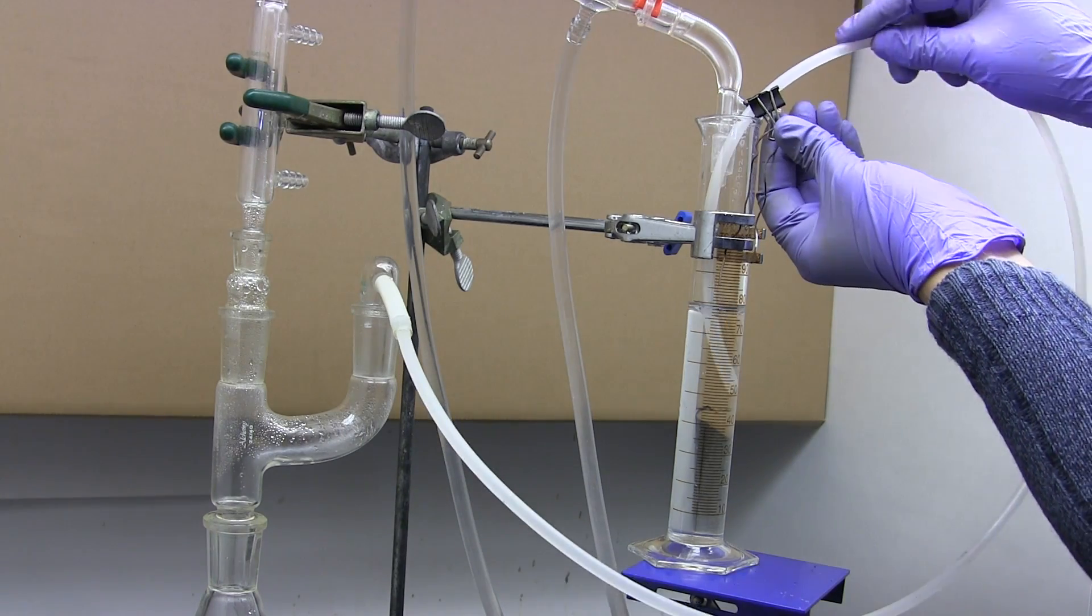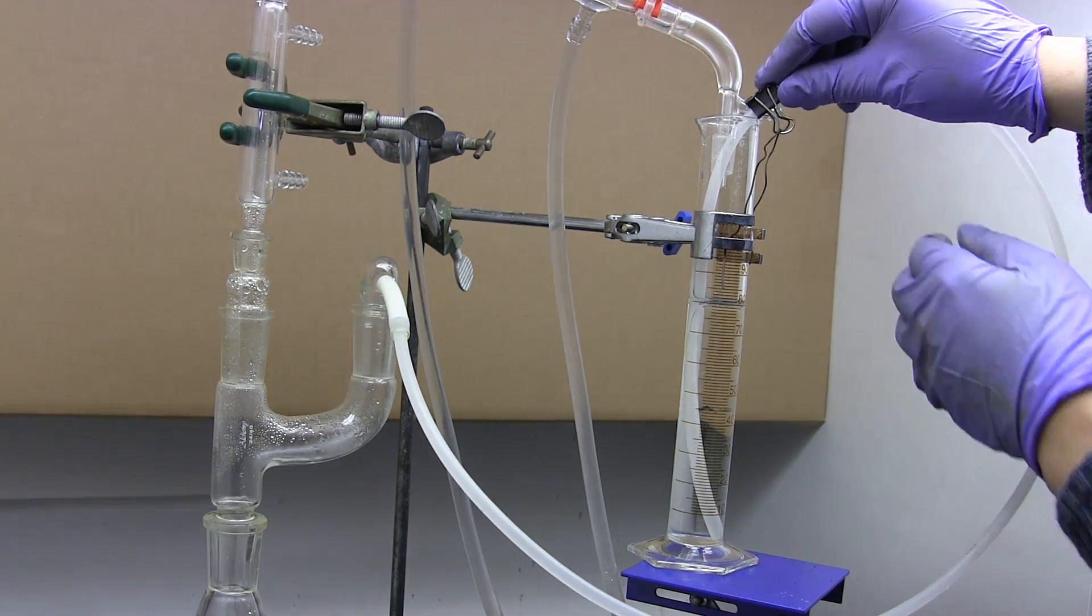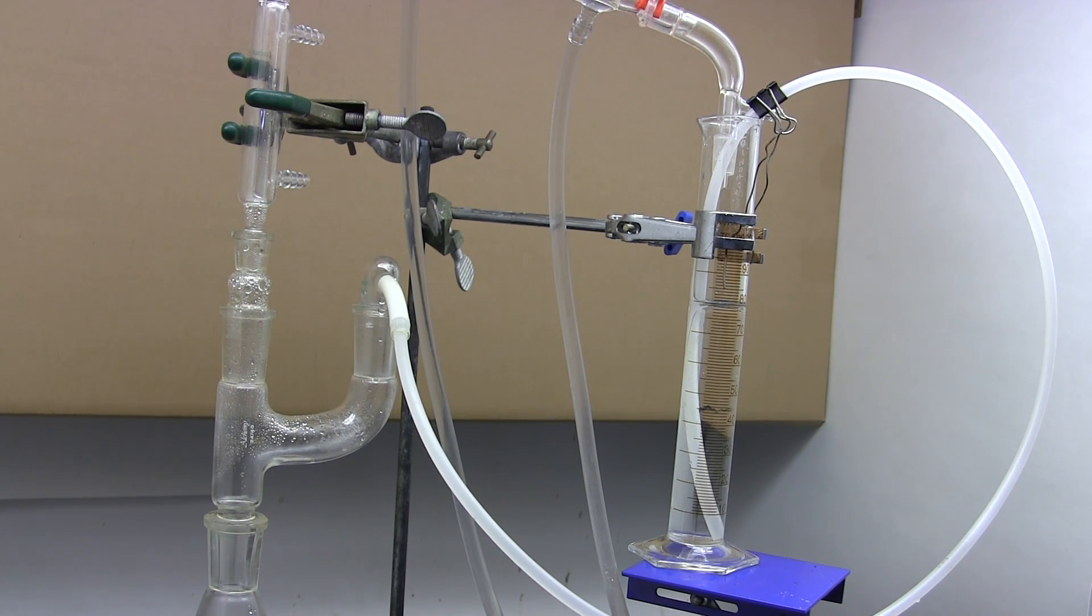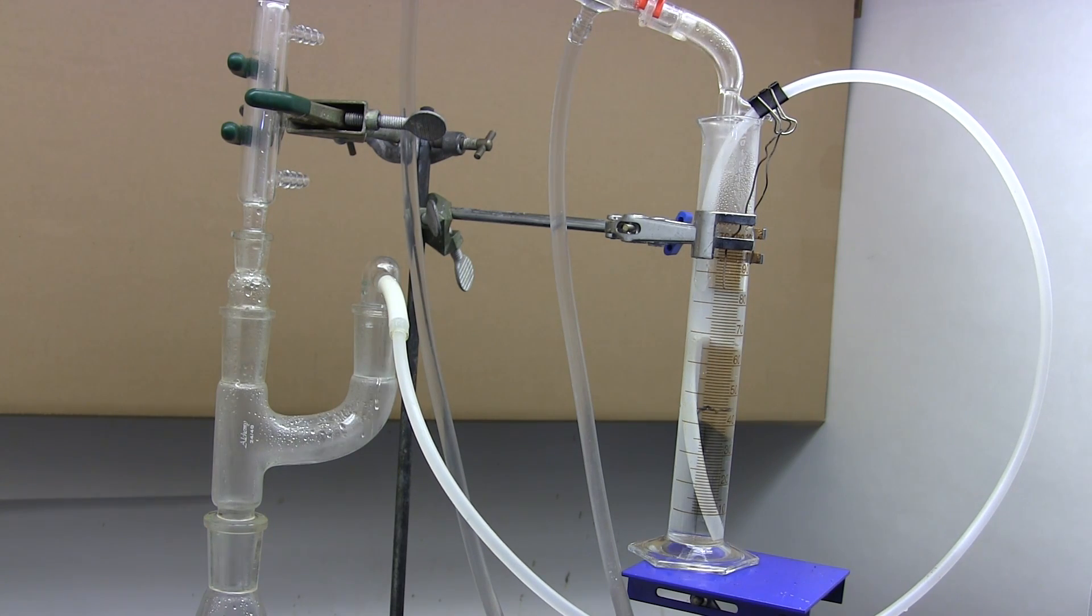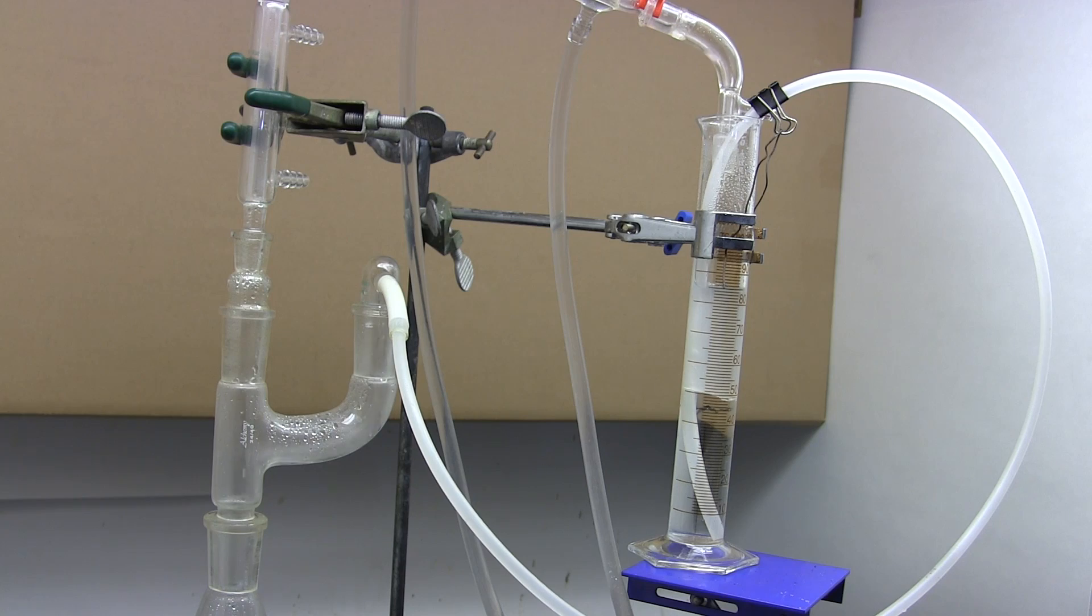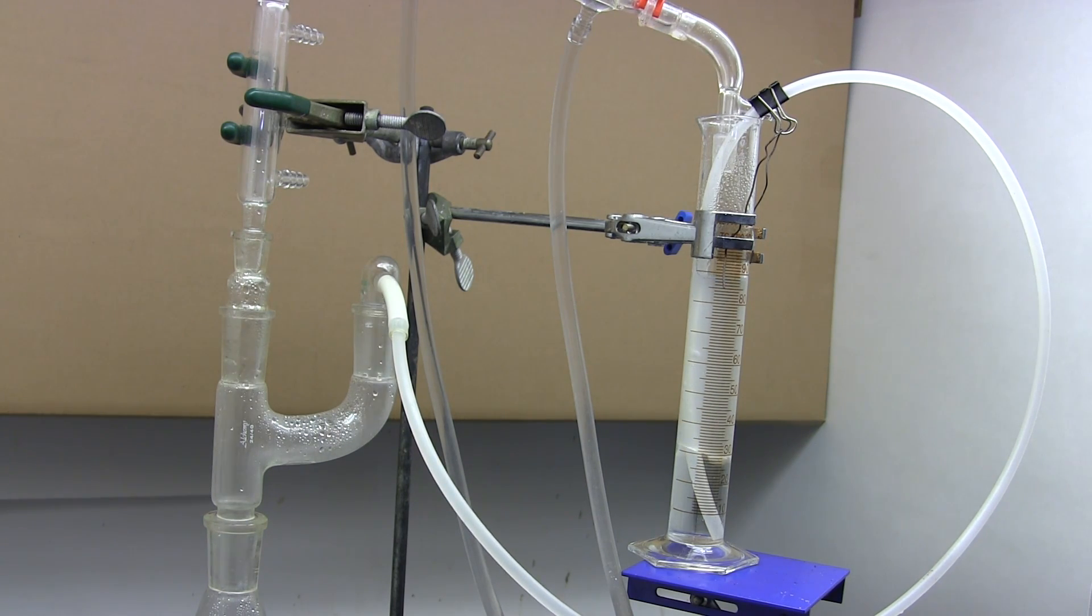Once everything is set up we just perform one simple change to convert this apparatus to heavy return mode. We push the siphon tube in the graduated cylinder all the way to the bottom. And that's it. Let me turn on the heating. Now when the distillate pours into the graduated cylinder the siphon tube sucks out the heavy layer and returns that. The lighter layer has nowhere to go and thus accumulates in the graduated cylinder. Heavy distillate will sink through the lighter layer and accumulate in the bottom where it can be siphoned out again.